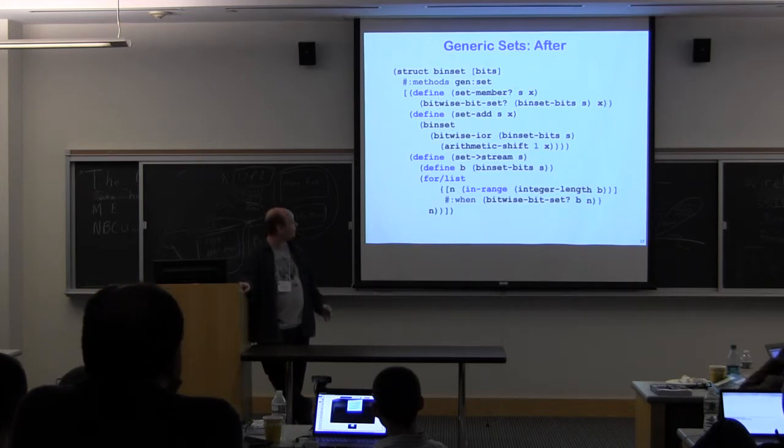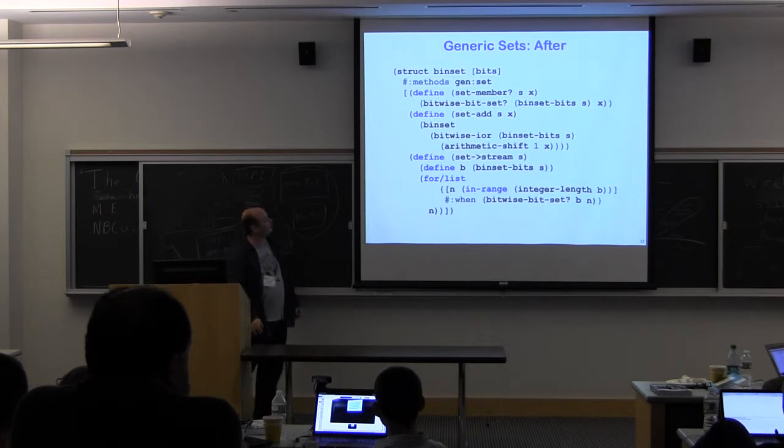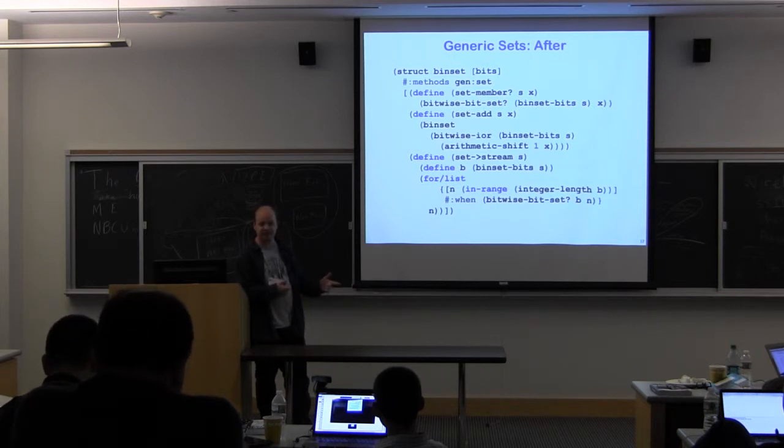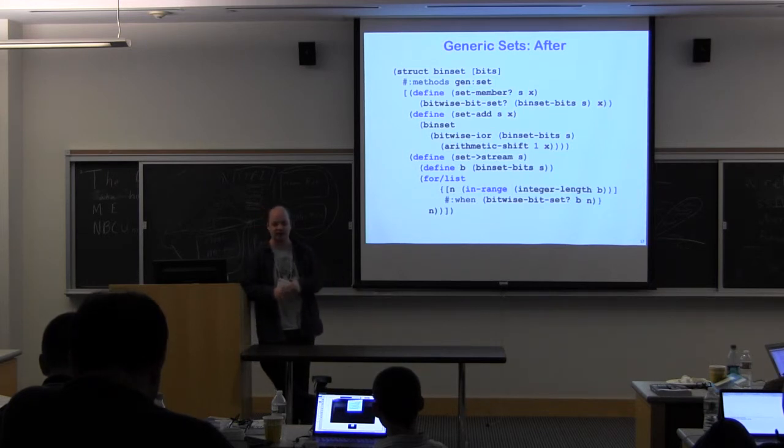And I can define my methods. And if I pick the right ones to define - member, add, and set-to-stream - I get a whole bunch of other ones for free. So why do I get a bunch of other ones for free? Well, here I've said this is a set that implements membership, addition of single elements, and conversion to a stream which allows iteration. And from, if you can add elements and check membership and do iteration, you can, for instance, define union just based on if you iterate over one set and add to the other.